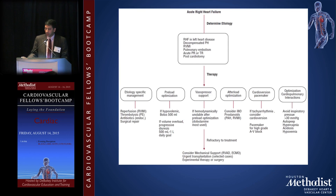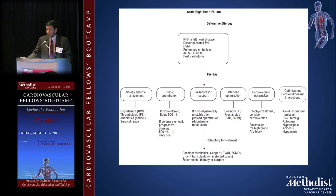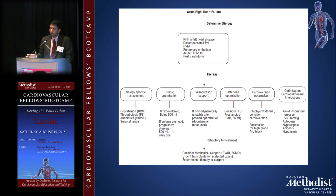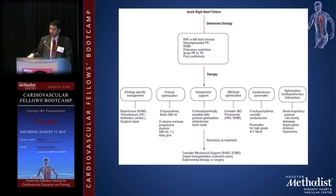Management is mostly etiology-specific. For RVMI or pulmonary embolism, address the cause via PCI or thrombolytics — catheter-directed or systemic. Then focus on preload optimization, afterload optimization, and inotropy. On the Frank-Starling curve, a 250–500 cc saline challenge is reasonable, but if there's no improvement, further volume will be harmful. Then add inotropes.